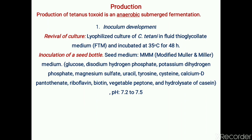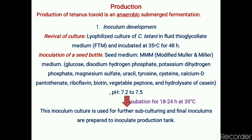Further, the seed bottles are prepared in sterile seed medium called modified Mueller and Miller medium, which contains sugars like glucose, amino acids, and several different types of vitamins. The pH of the medium is 7.2 to 7.8. It is incubated again for 18 to 24 hours at 35°C, and in subsequent stages subculturing is done to obtain the final inoculum suitable for inoculation of the production tank.